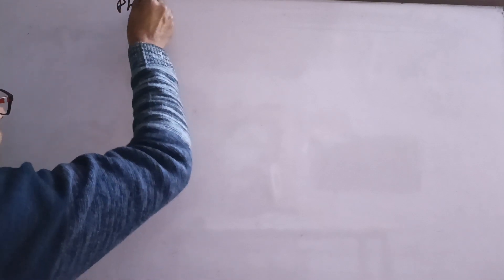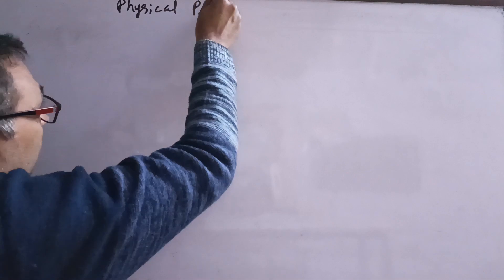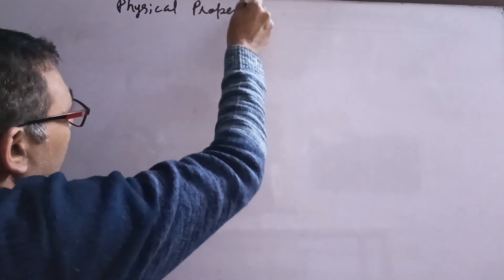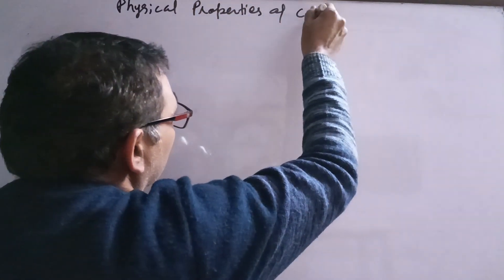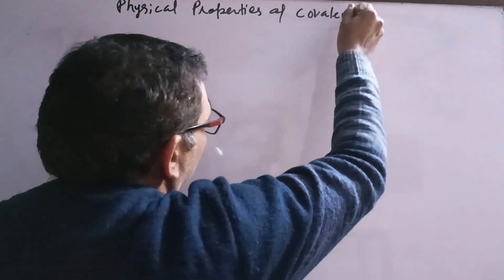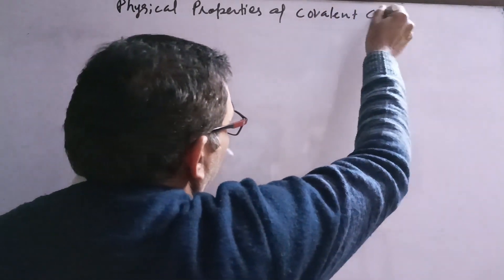Before discussing specific compounds like alcohol or acetic acid, we should understand the physical properties of covalent compounds.